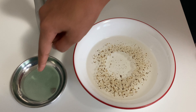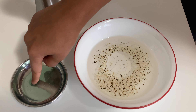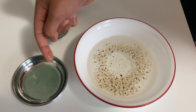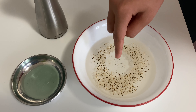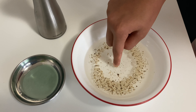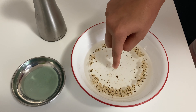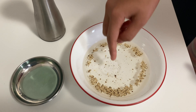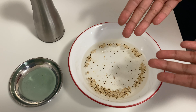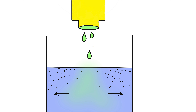If I take some dish soap on my finger, as you can see here, and dip it into the water, the pepper and water move to the side. Why does that happen? Well, this soap breaks the surface tension, and when the surface tension is broken the water moves to the side because the bonds are broken, and then the pepper moves with the water.